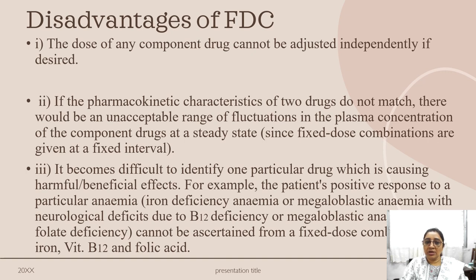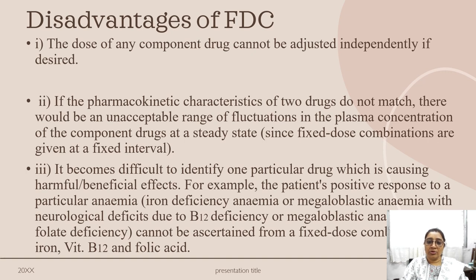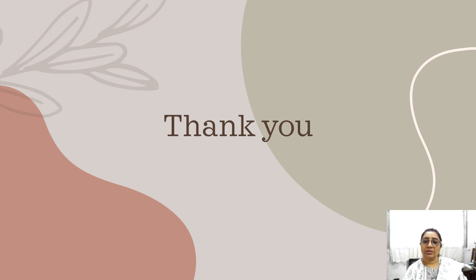It also becomes difficult to identify which particular drug is causing a harmful or beneficial effect. For example, a patient's positive response to a particular type of anemia — such as iron deficiency anemia, megaloblastic anemia with neurological deficit due to B12 deficiency, or megaloblastic anemia due to folate deficiency — cannot be ascertained from a fixed dose combination of iron, vitamin B12, or folic acid.